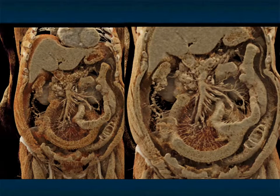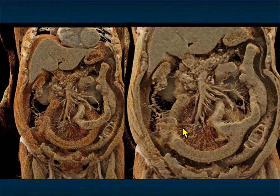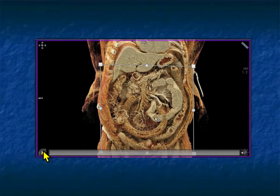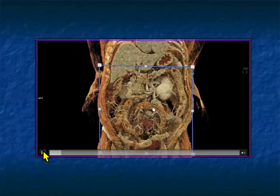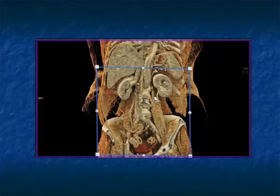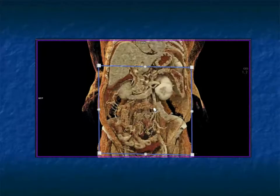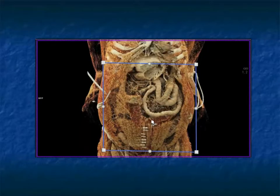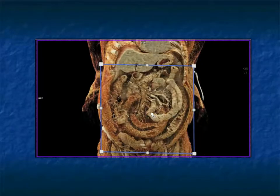By changing the rendering parameters, you can optimize things — here the bowel is less well seen because I'm accentuating the vessels more, and here the vessels are a little less well seen but you can see all the changes in the bowel wall. Interactively, this is how I would be looking at it — using the box to cut through, looking at the vessel including the portal vein and SMV thrombus, and looking at the extent of bowel involvement and orientation.